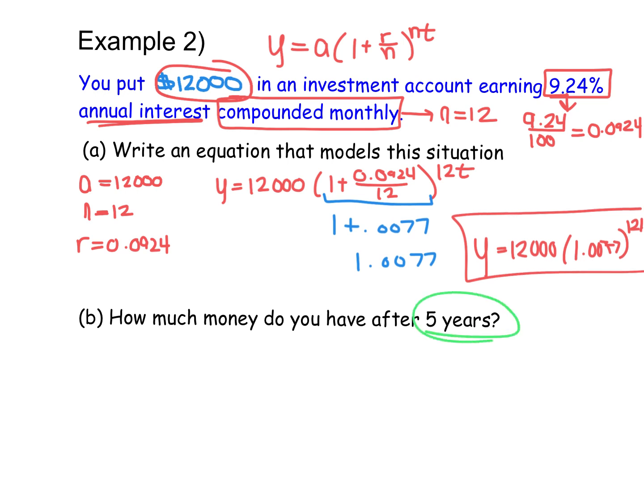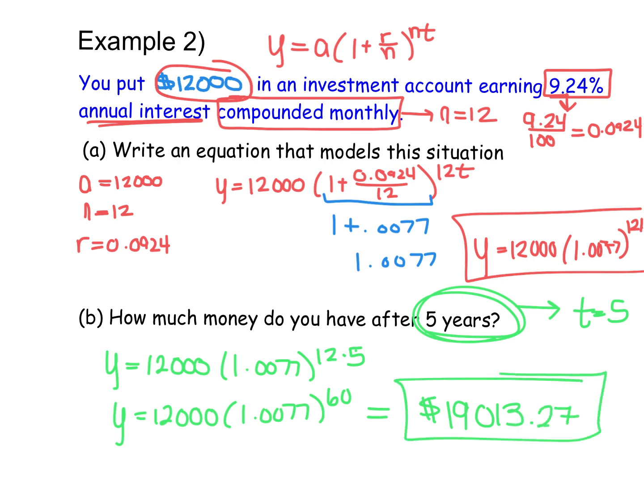Part B says, how much money do you have after 5 years? Remember, T needs to be in years, so this is going to be T is equal to 5. And then from here, we have Y is equal to 12,000 times 1.0077 to the power of 12 times T, which is 5. So that turns into 12 times 5 is 60. So that's 12,000 times 1.0077 to the power of 60. We can plug in 12,000 times 1.0077 to the power of 60, and we would end up with, after 5 years, approximately $19,013.27. Which is a pretty great deal. We've increased by $7,000 in just 5 years.